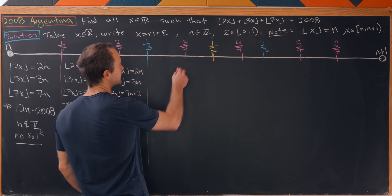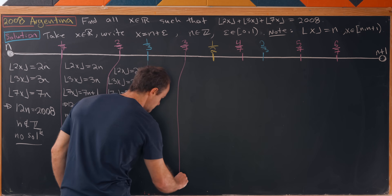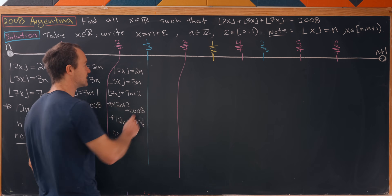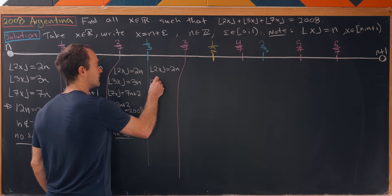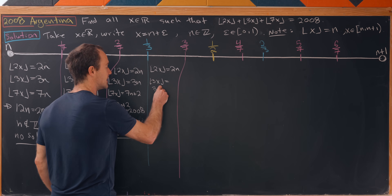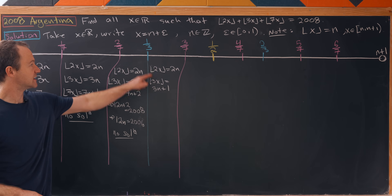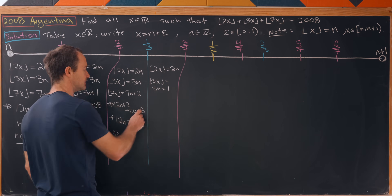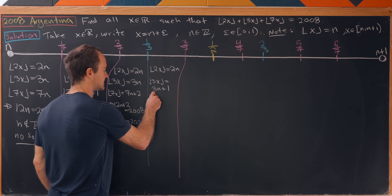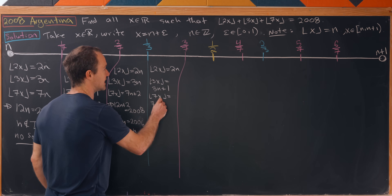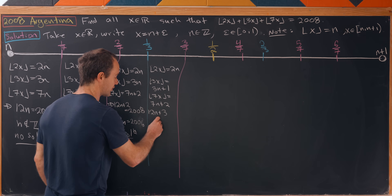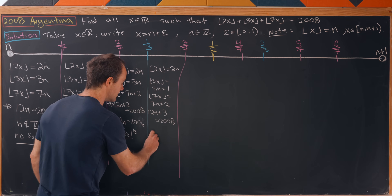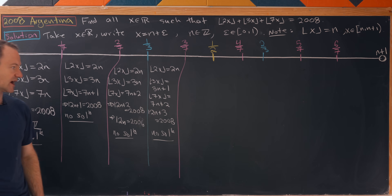Moving to the next region between 1/3 and 3/7: floor(2x) = 2n (still less than a half), floor(3x) = 3n + 1 (we're now between one-third and two-thirds), and floor(7x) = 7n + 2. Adding these up: 12n + 3 = 2008. Again no solution, because the left-hand side is odd whereas the right-hand side is even.